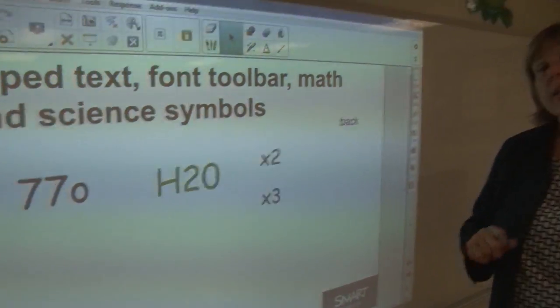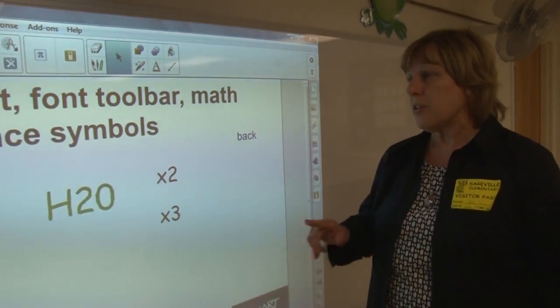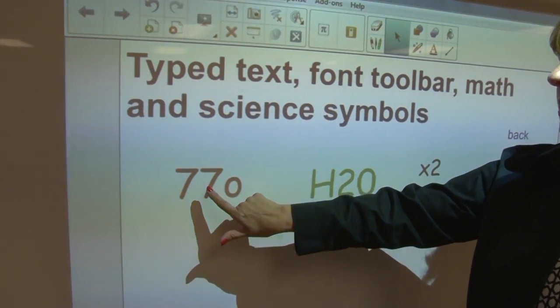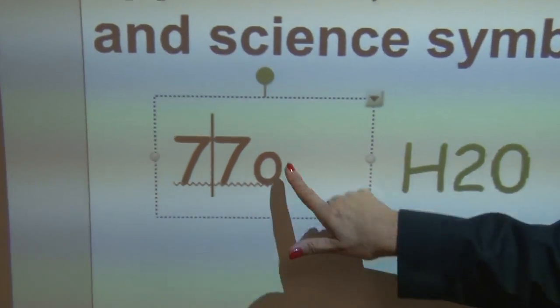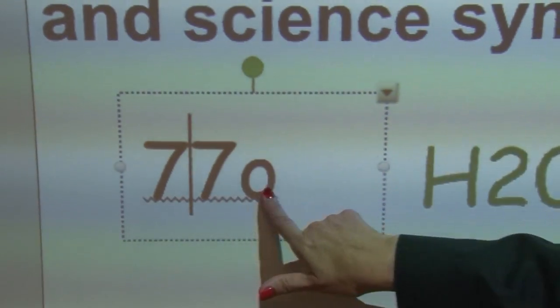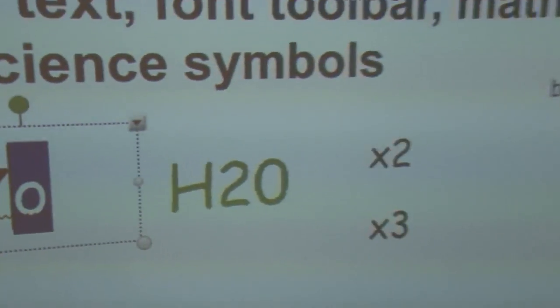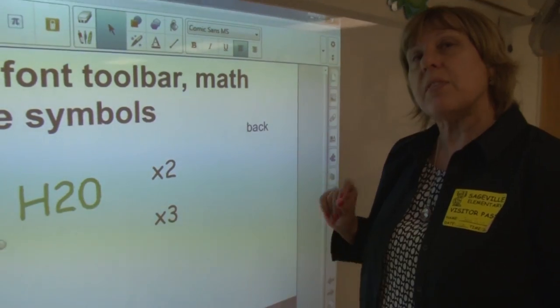One of the most important things that teachers want to know about is special characters and symbols. When I double-click on this 77 lowercase o, I can get my text edit, and when I highlight, I need to raise that o so that it's 77 degrees.